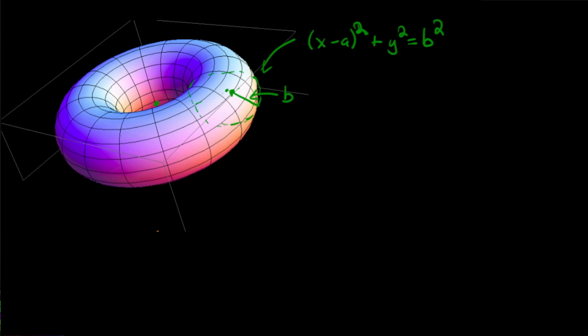So the idea is that this is a circle of radius b, and the equation of this circle is x minus a squared plus y squared equals b squared. Here the center from the, let's assume this is the axis. This is zero and this point would be a.